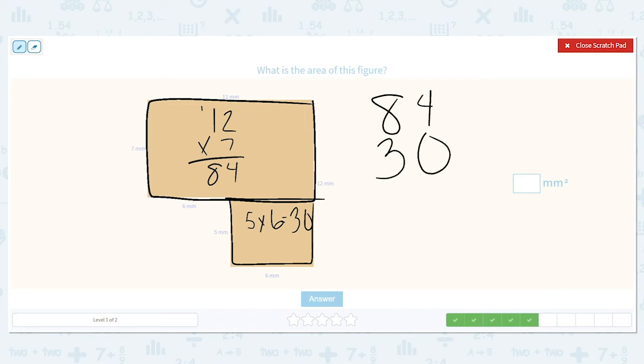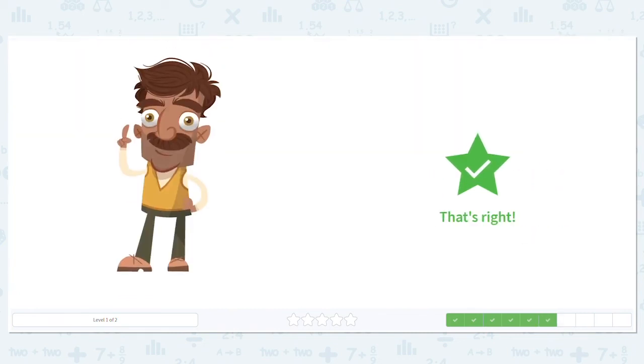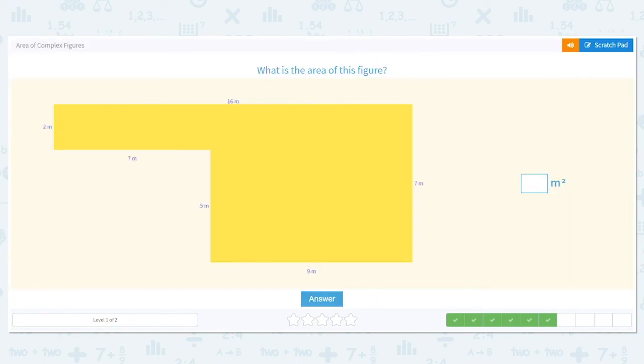Why are we adding them? Because we split them into two smaller figures, and now we have to put it back together to get the complete number. And 8 plus 3 is 11. So my area for this one is 114 millimeters squared. Next one.